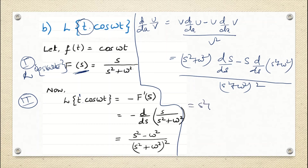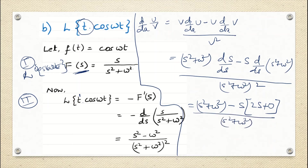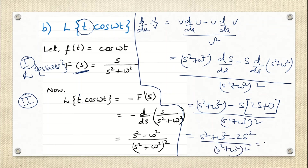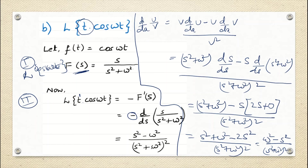The first term: (s² + ω²)·(d/ds of s) gives 1, then minus s·(d/ds of s²) gives 2s, and d/ds of ω² (constant) is 0, denominator (s² + ω²)². So the numerator is s² + ω² minus 2s², giving s² + ω² minus 2s². One more negative sign is present, so rearranging we get s² minus ω² divided by (s² + ω²)². This is the answer to the second question.